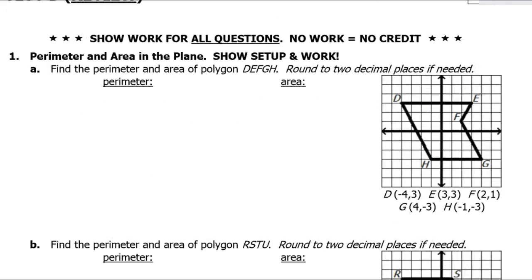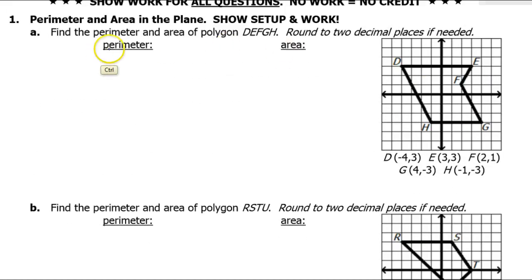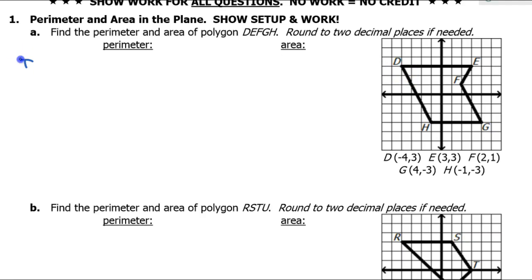Let's start with problem number one. The perimeter is simply the sum of all of the sides, so I need to find all of the side lengths and add them up. Let's start with the top segment DE. This is horizontal so I can just count — that's 4 and 3, so that's going to be 7.